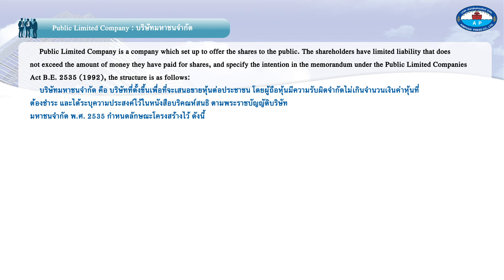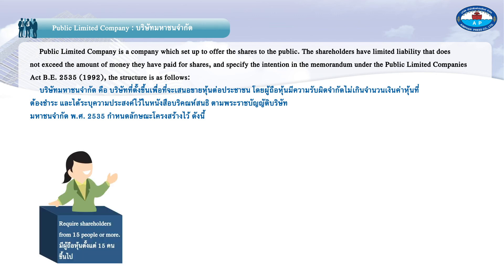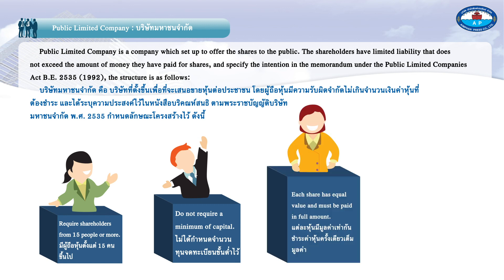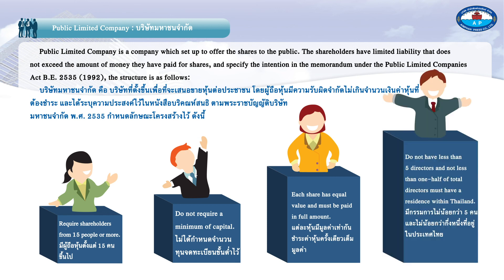The structure of a public limited company is as follows: one, requires shareholders of 15 people or more; two, does not require a minimum capital; three, each share has equal value and must be paid in full; four, must have not less than five directors, and not less than one half of the total directors must have a residence within Thailand.